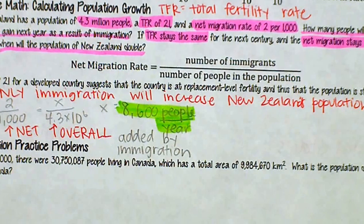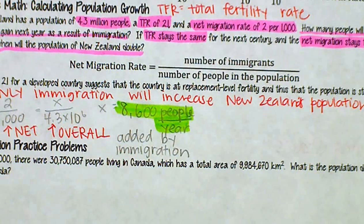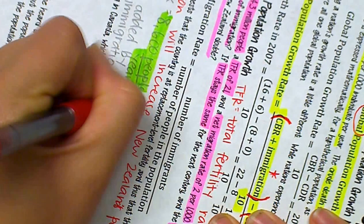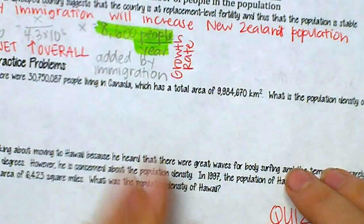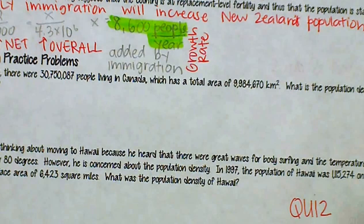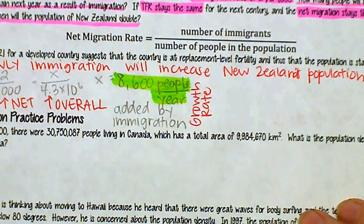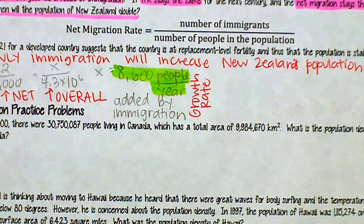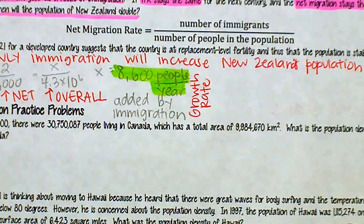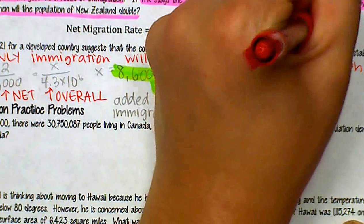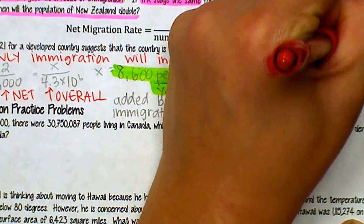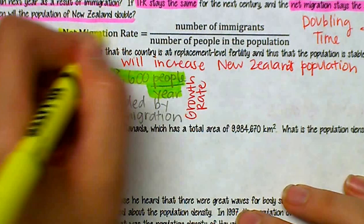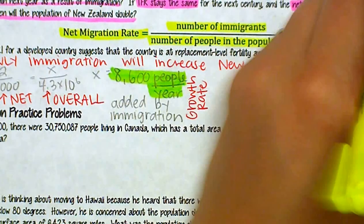Next we want to find the growth rate, because the only way to find doubling time is from the growth rate. The doubling time formula is: doubling time equals 70 over r, where r is the growth rate. So I need to find the growth rate first.